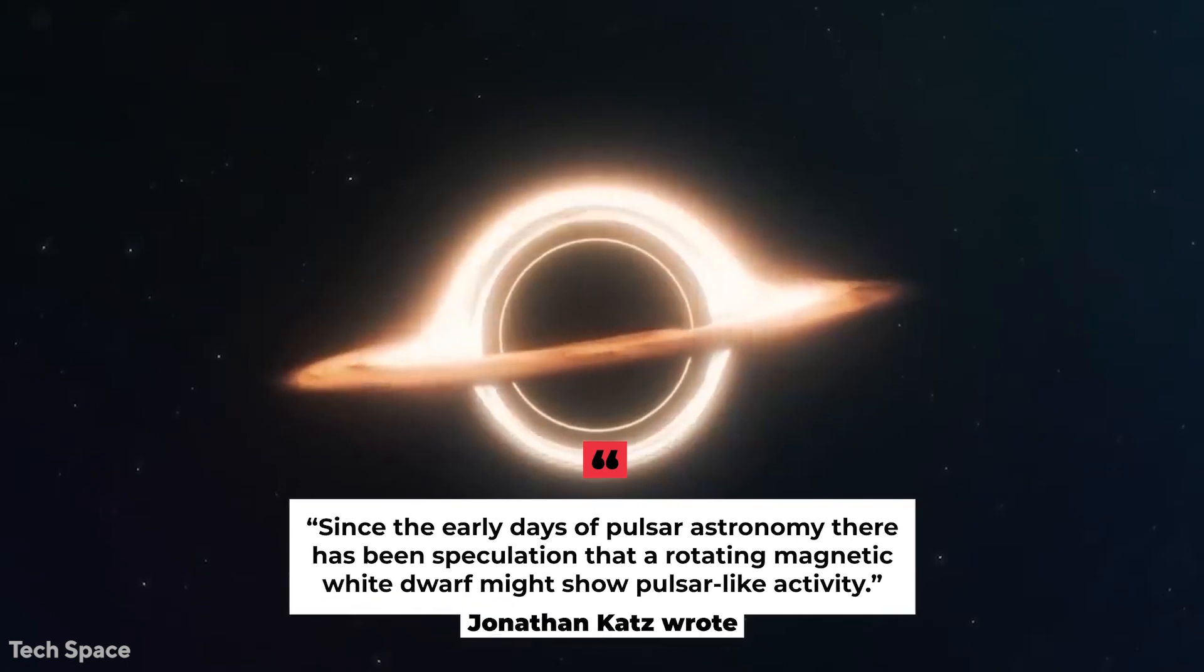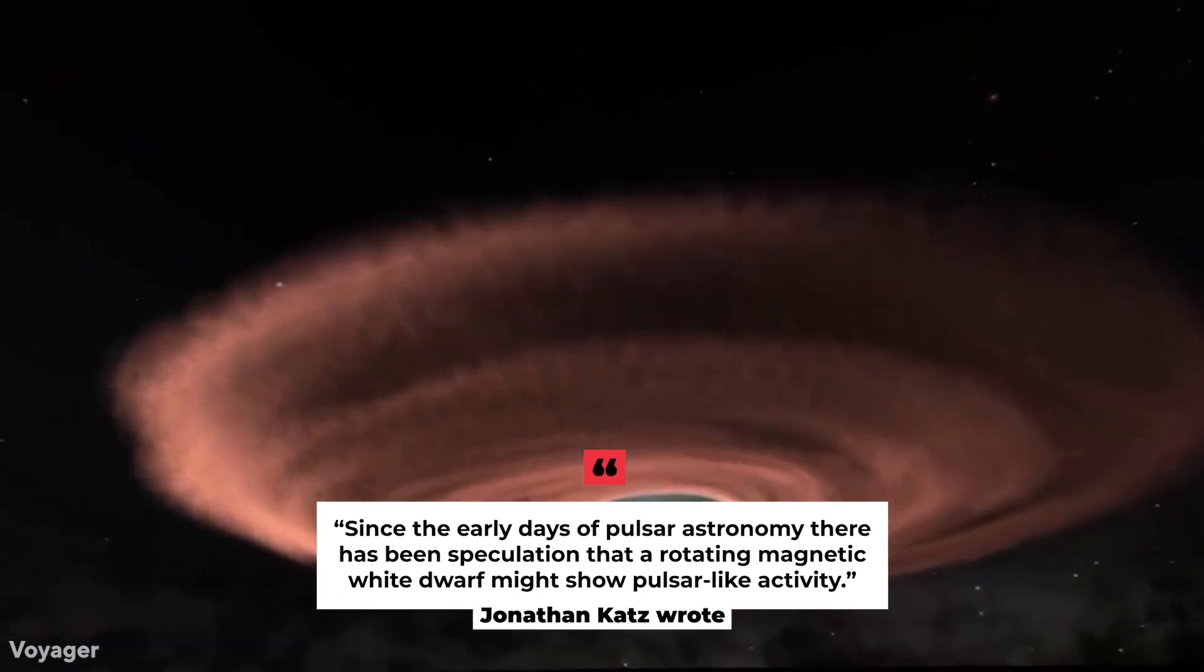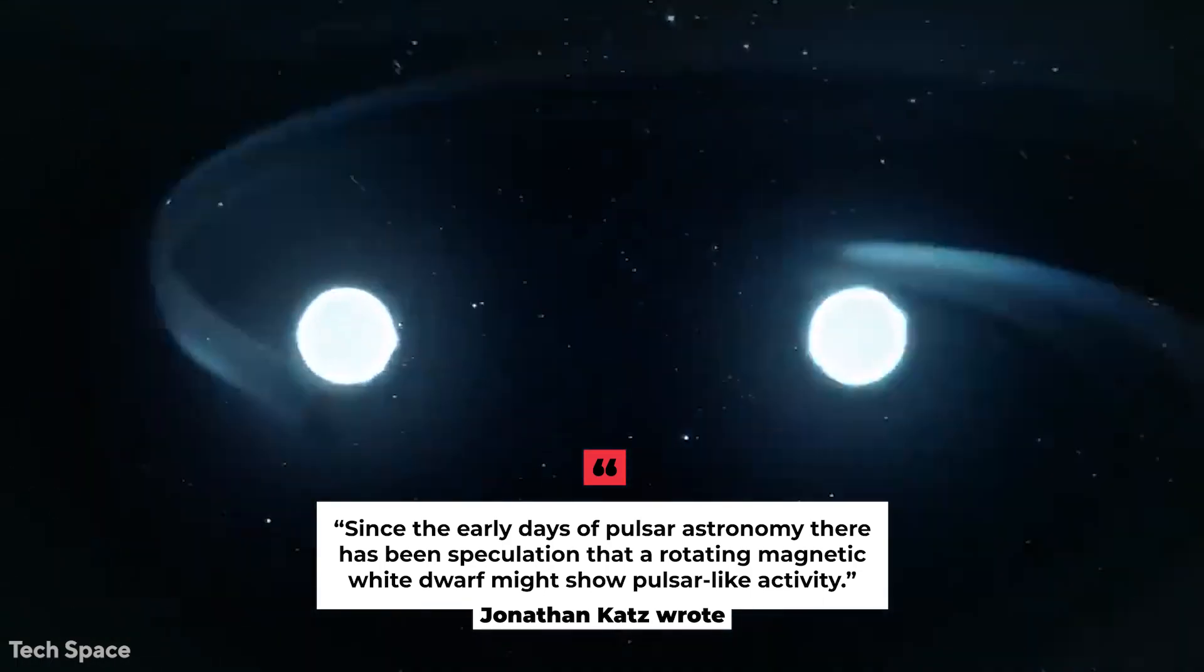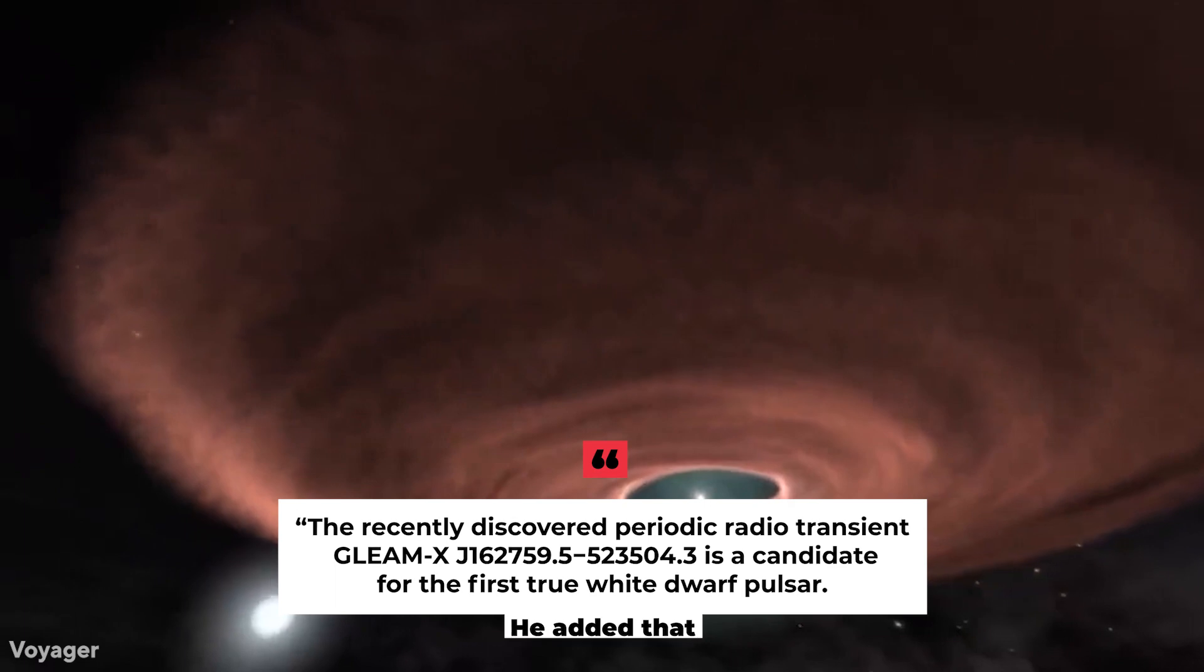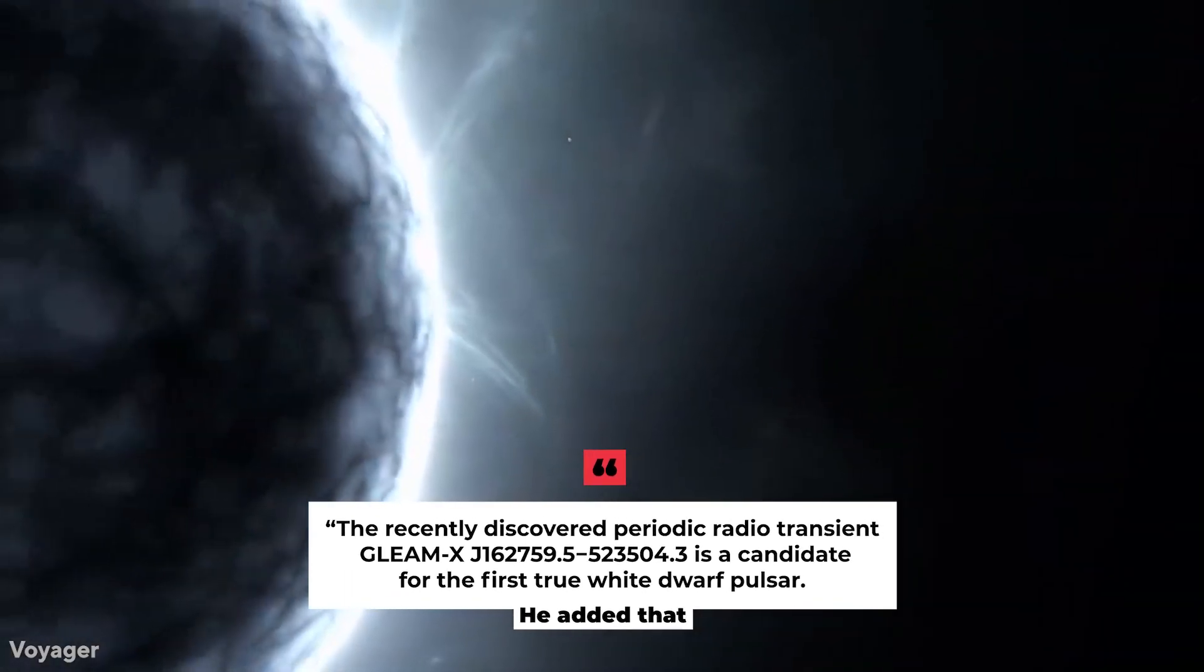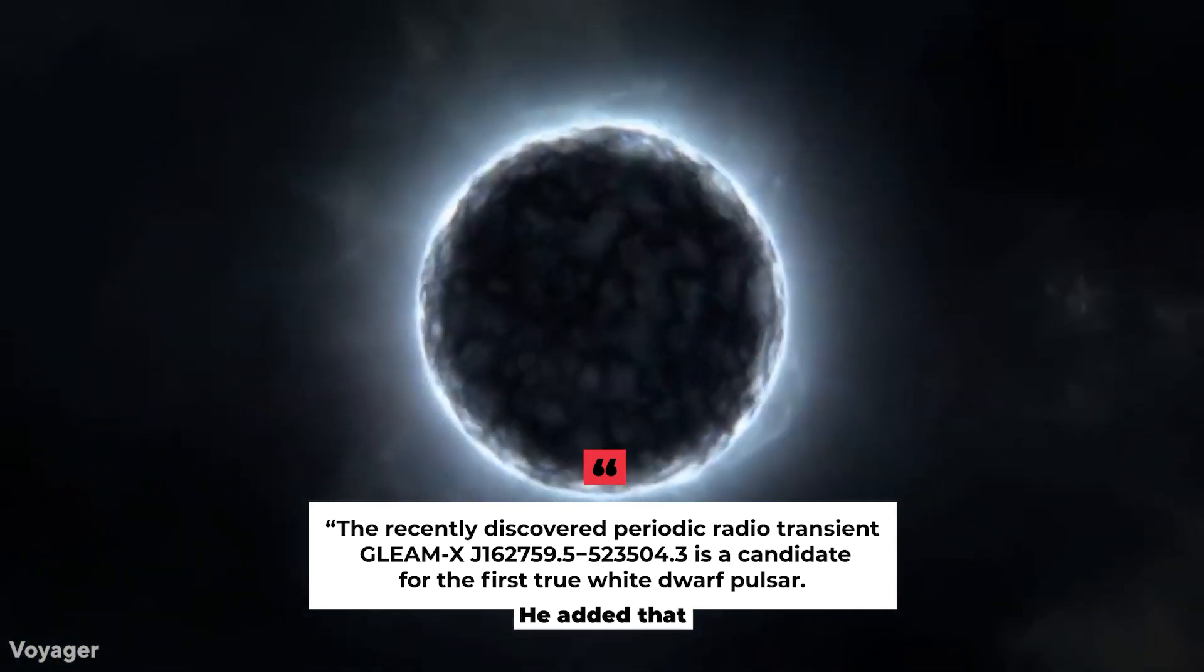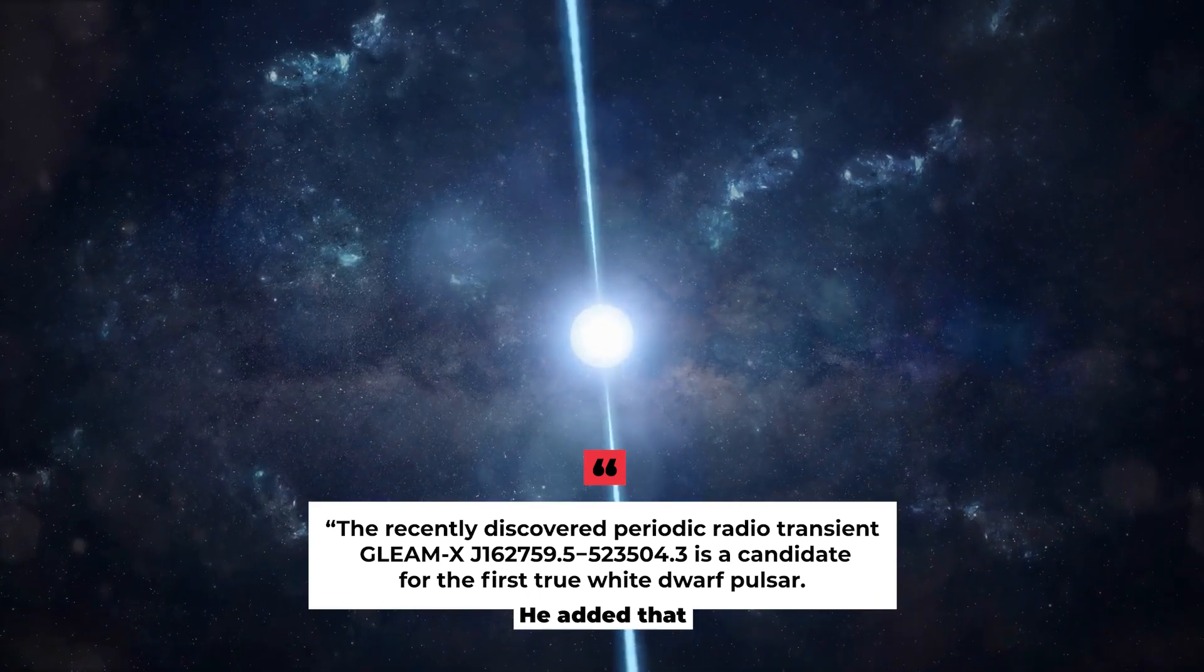Jonathan Katz wrote in his yet-to-be-reviewed paper, since the early days of pulsar astronomy, there has been speculation that a rotating magnetic white dwarf might show pulsar-like activity. He added that the recently discovered periodic radio transient GLEAM-X J162759.5-523504.3 is a candidate for the first true white dwarf pulsar.